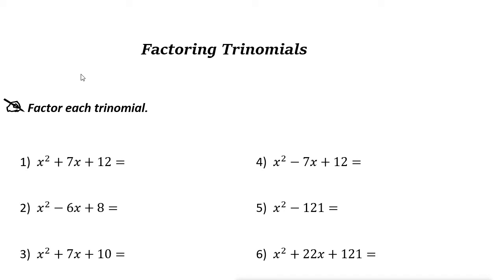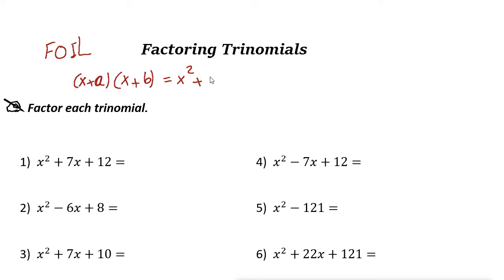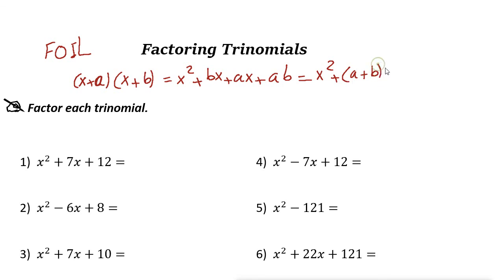If you remember the FOIL method, for example we have (x + a) times (x + b). The FOIL method says: First means x times x is x squared; Outer means x times b is plus bx; Inner means a times x is plus ax; Last means a times b is plus ab.